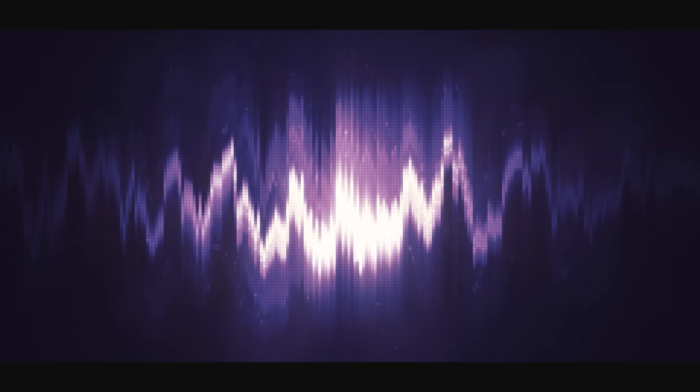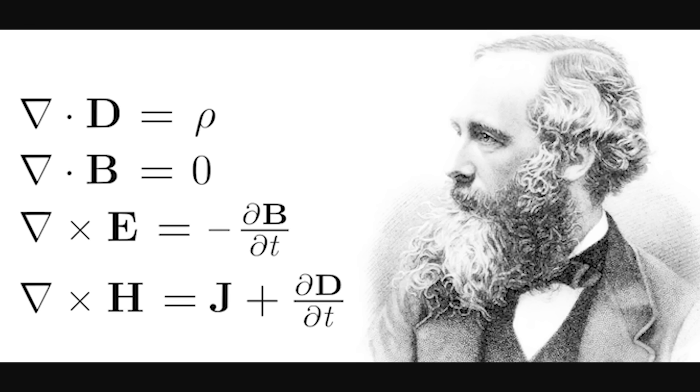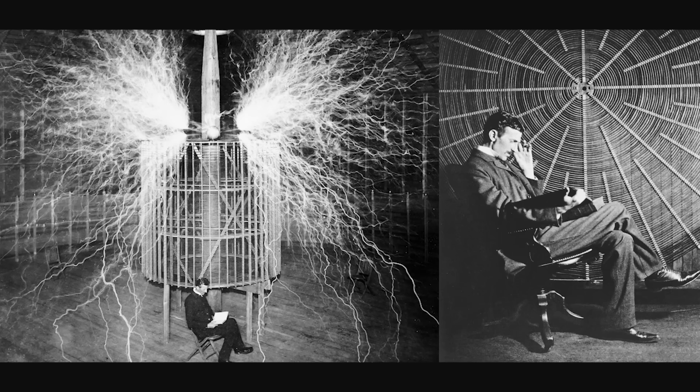Scalar waves are generated through specific configurations of electromagnetic fields that cancel each other out to create a stationary pulsating energy field. We can trace the origins back to James Clerk Maxwell in the mid-1800s, where Maxwell's equations predicted the existence of scalar potentials, though they were largely overlooked by mainstream science for many decades. Then came Nikola Tesla in the 19th and early 20th century. Tesla conducted experiments suggesting that scalar waves could transmit energy without the need for a medium like wires or cables — free unlimited wireless energy and communication. His groundbreaking work laid the foundation for modern wireless technology, but his exploration into scalar energy remained very controversial.